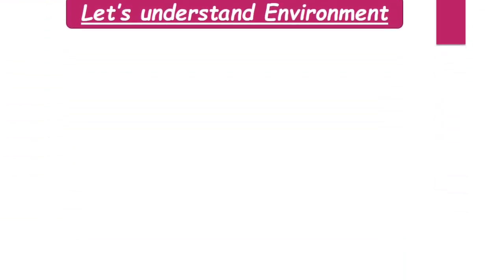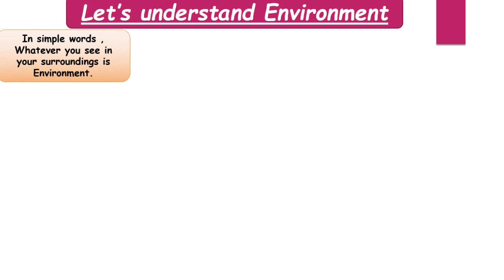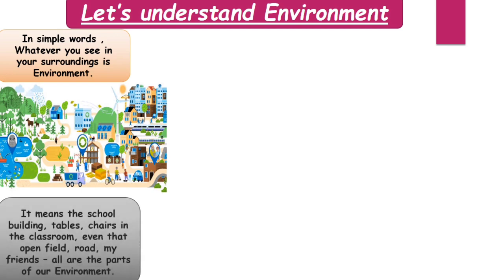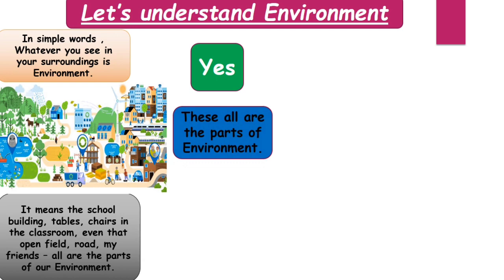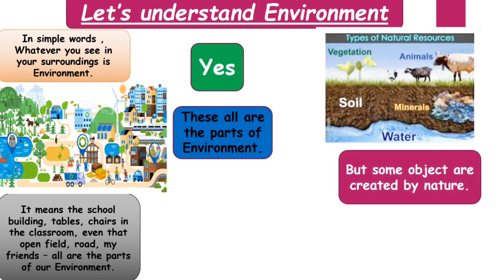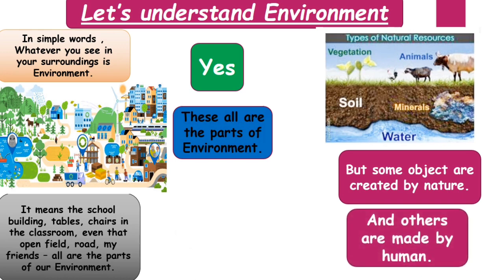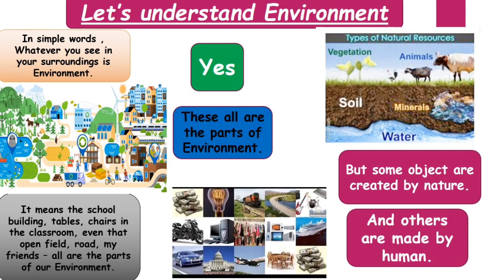Before studying the definition of environment, let's understand what environment means in simple words. Whatever you see in your surroundings is environment — the school building, tables, chairs in the classroom, that open field, road, my friends — all are parts of the environment. Some objects are created by nature, called natural environment, and some are made by humans, called human environment.